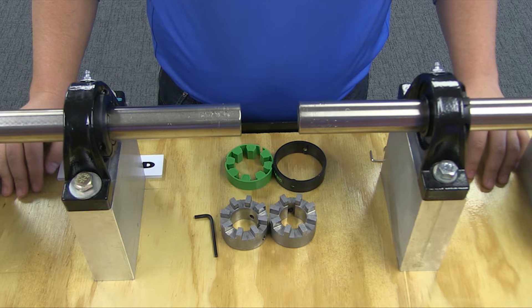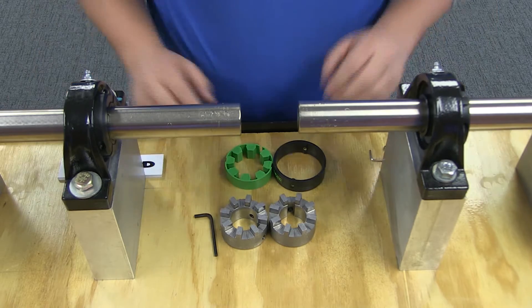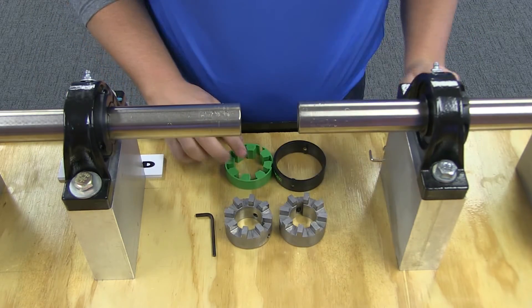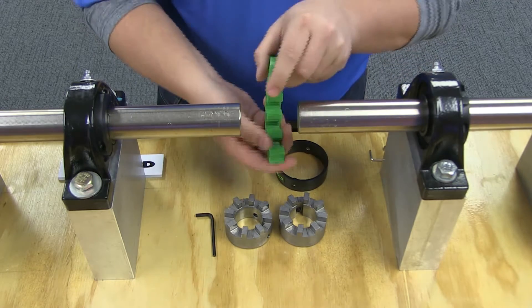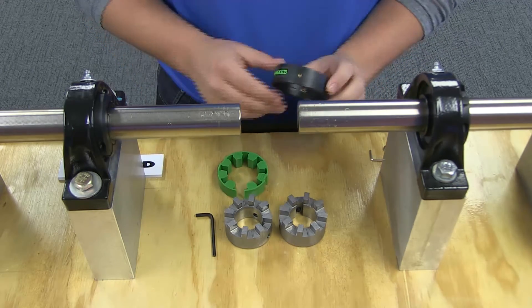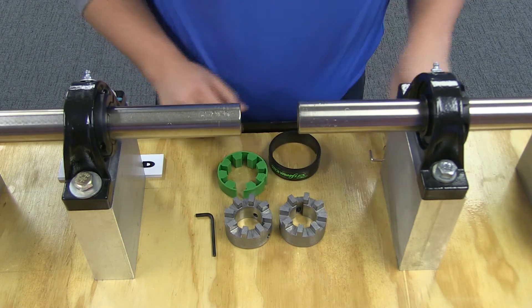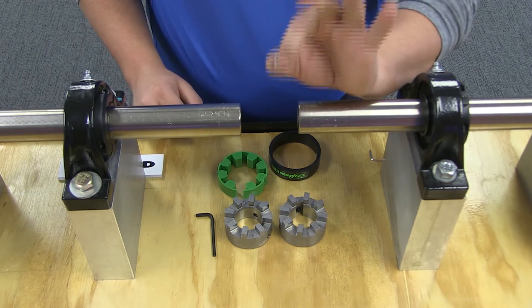Due to RAVFLEX's simple design, there are just a few components to work with when installing this coupling: two hubs, the green wrap element, the retention cover, and the two screws you will need to hold the cover in place.